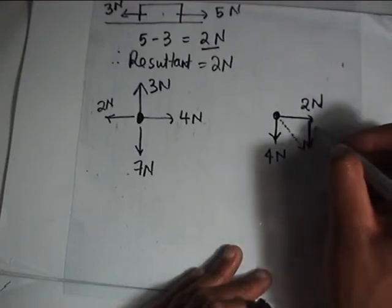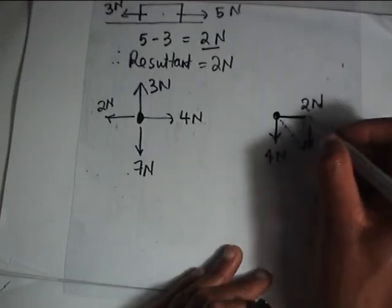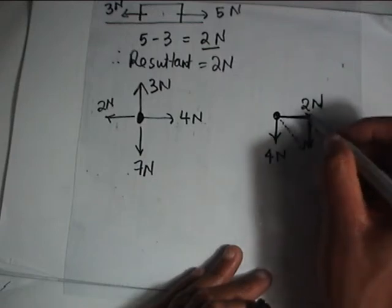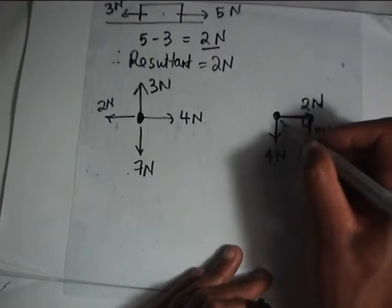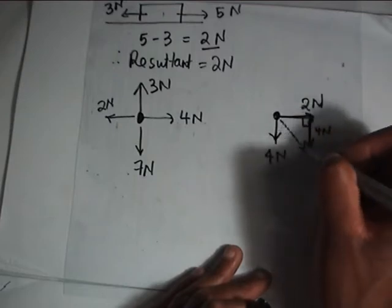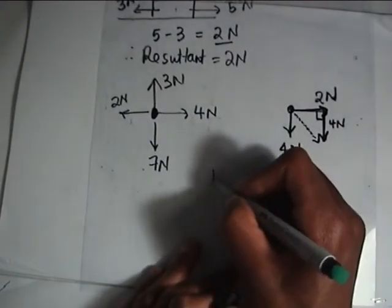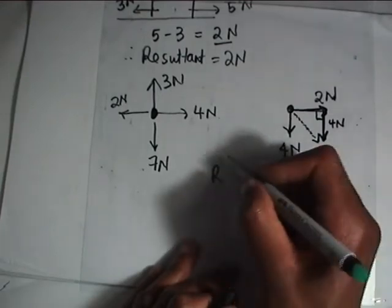Once we've placed it there, this one will be 4 newtons. We have this force and this force, and this is 90 degrees. So this is going to be our resultant — we apply our Pythagorean theorem.